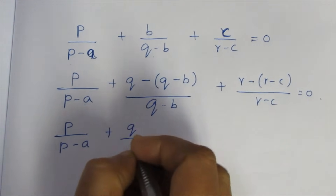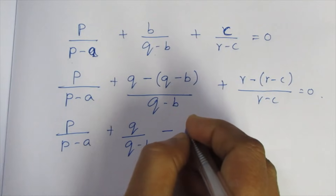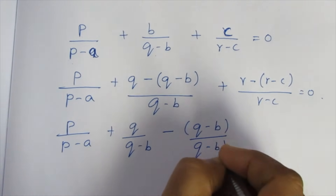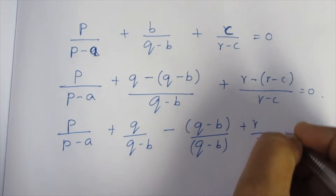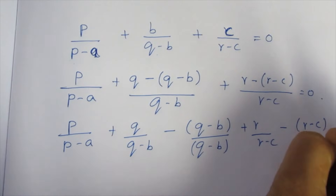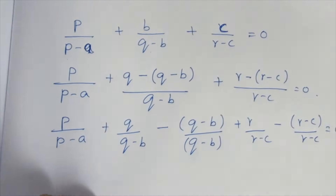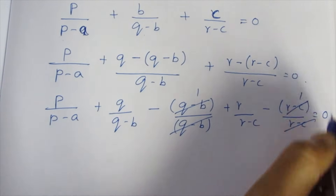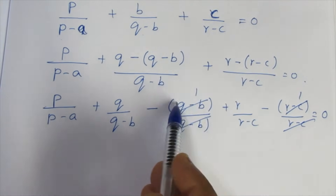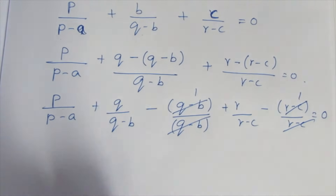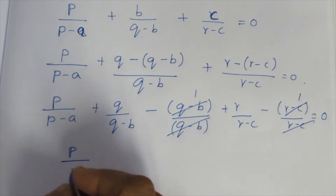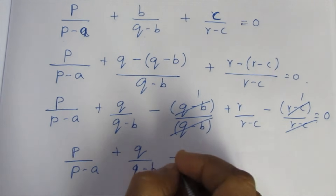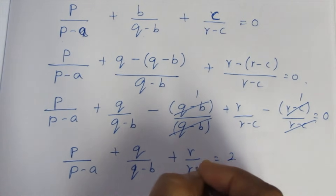We have P/(P-A) plus Q/(Q-B) minus sign, then plus R/(R-C) minus R-C/(R-C) equals zero. Cancelling terms where the denominator is the same, minus 1 minus 1 minus 1 condenses to plus 2. Therefore, P/(P-A) + Q/(Q-B) + R/(R-C) = 2.